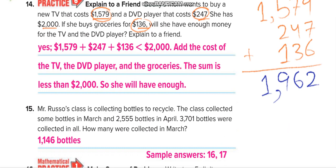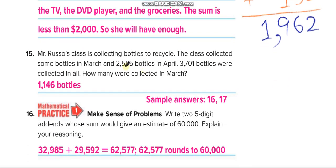In this one, you have to minus. Why? Because Mr. Russo's class is collecting bottles to recycle. The class collected some bottles in March and this much in April, and this much bottles were collected in all. How many were collected in March? You have to find the difference between them.